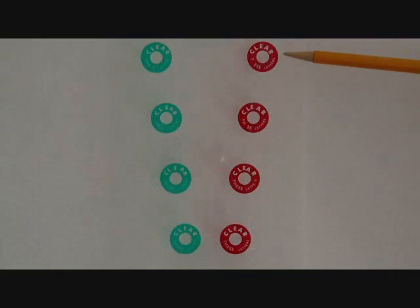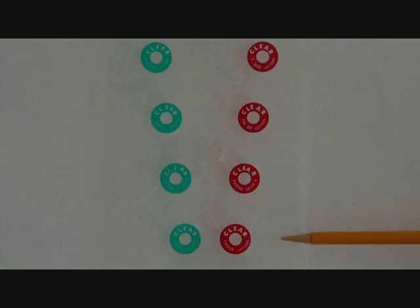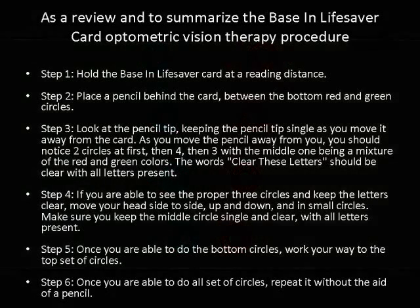After completing four levels, start at the bottom set of circles again, but this time without using a pencil aid. Once fixation is kept clear for at least five seconds, move up to the next level until all four levels are completed without the use of a pencil.